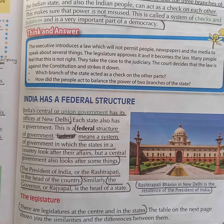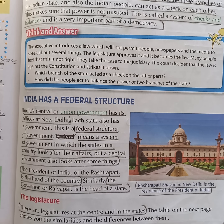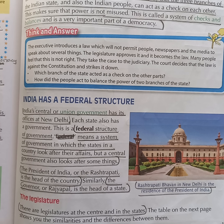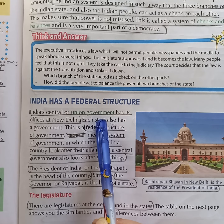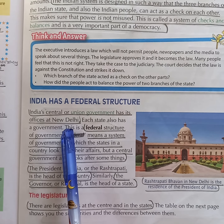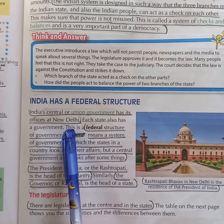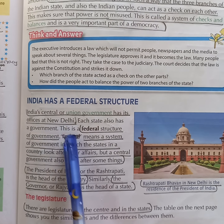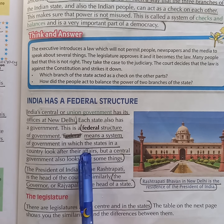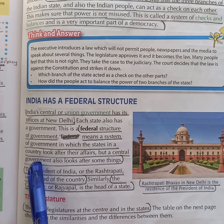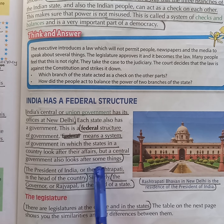Next question: where are the offices of the union government situated? Answer: India's central government or union government has its offices at New Delhi. Next question: what do you mean by a federal structure of government? Answer: a federal structure of government means a system of government in which the states in a country look after their own affairs, but a central government also looks after some things.